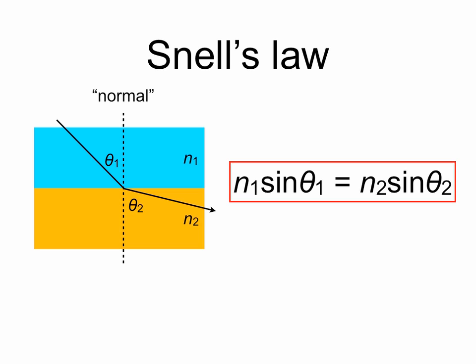Otherwise, we could have drawn theta2 as being larger than theta1, in which case N1 must be larger than N2. So in general, the larger the refractive index of the material, the smaller the angle relative to the normal the light will make upon refracting.